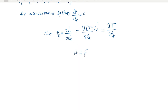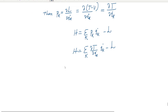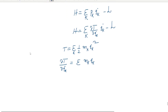Substituting this into the Hamiltonian function H = summation k pk·q̇k − L, we replace pk with ∂T/∂q̇k. Now the kinetic energy is T = (1/2)m·q̇k², so differentiating with respect to q̇k gives ∂T/∂q̇k = m·q̇k. Multiplying both sides by q̇k gives m·q̇k² = 2T.